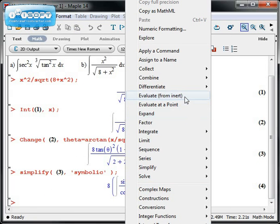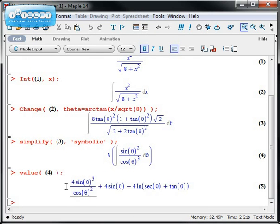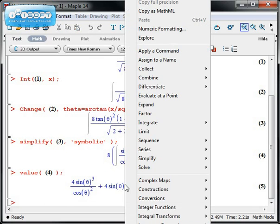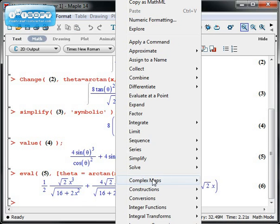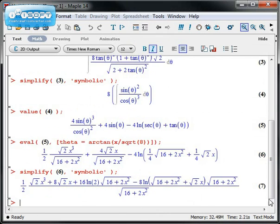If I right-click and evaluate now, it's able to integrate that using sines and natural logarithms. Of course, I still have to back substitute. So I can go back to evaluate at a point, and I'll type in theta equals the arctangent of x divided by the square root of 8, since that was my substitution. I get this. I'll right-click and have it simplify it a little bit more. It's not pretty, but there's the integral.